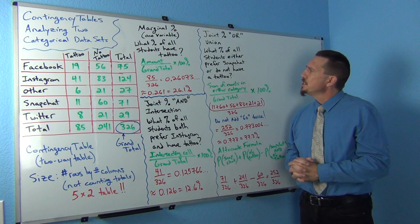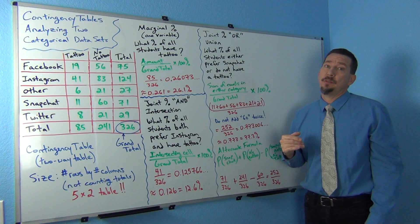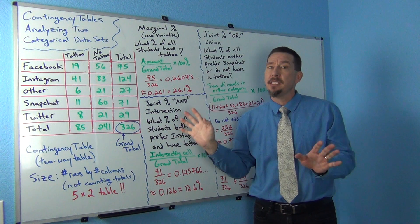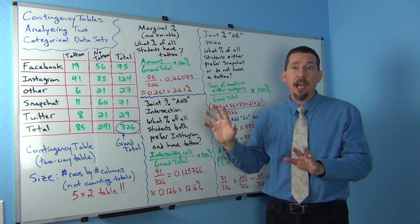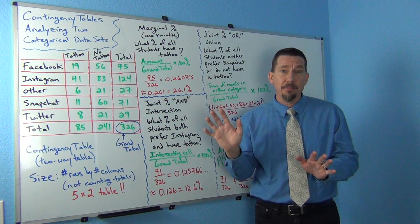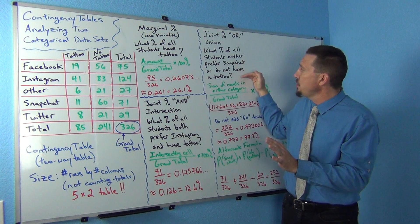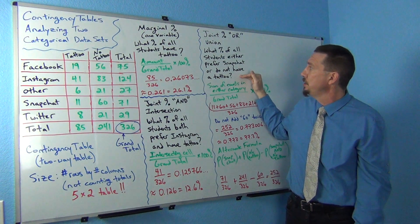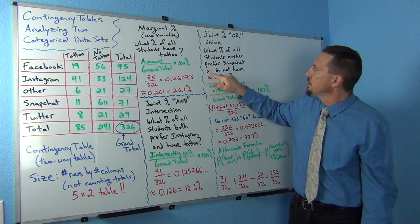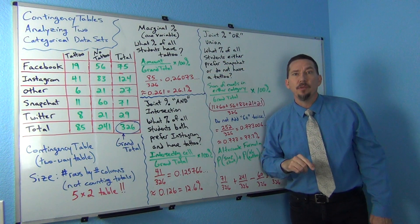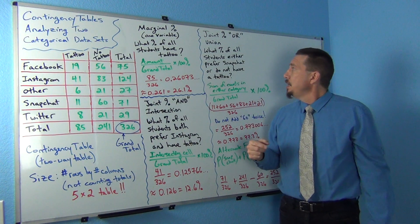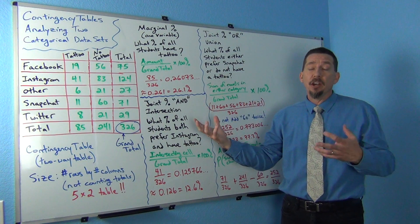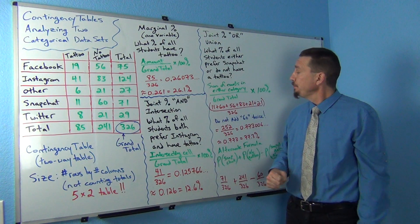What percentage of all the students either prefer Snapchat or do not have a tattoo? So Snapchat or do not have a tattoo. I have to include anybody that does not have a tattoo, regardless of what social media they like. I also have to include everybody that prefers Snapchat, whether or not they have a tattoo. So if either of these two things is true about the person, I have to include them in my proportion or percentage. We refer to it as a union percentage. When finding an or or union percentage, you add up all the people in either of the two categories.